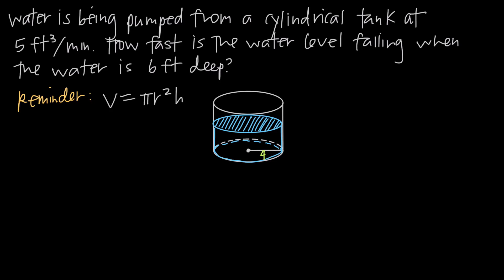In this video, we're doing another related rates problem. With this particular problem, we've been told that water is being pumped from a cylindrical tank at five cubic feet per minute. That's how much water we're removing per minute. How fast is the water level falling when the water is six feet deep?